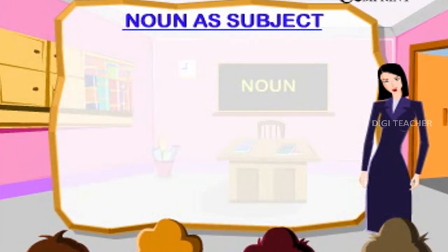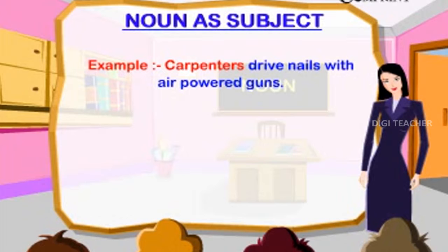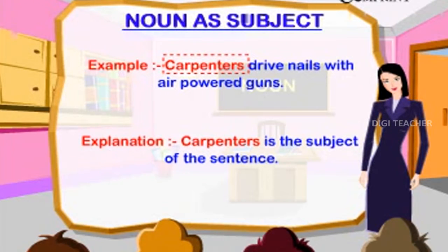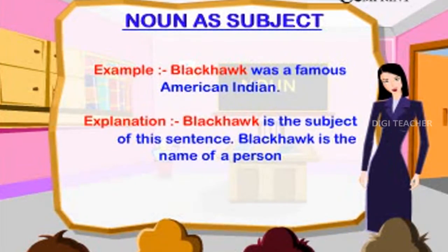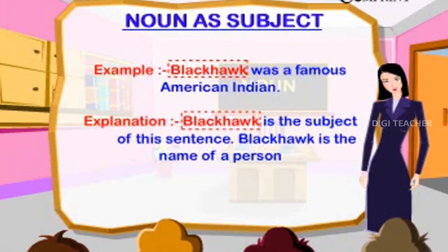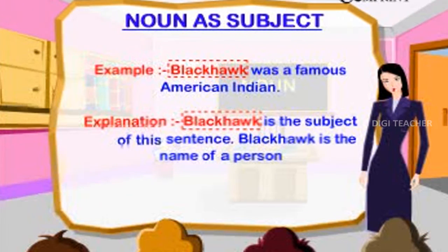Noun as Subject. Example: Carpenters drive nails with air-powered guns. Carpenters is the subject of the sentence. Example: Blackhawk was a famous American Indian. Blackhawk is the subject of the sentence; Blackhawk is the name of a person.